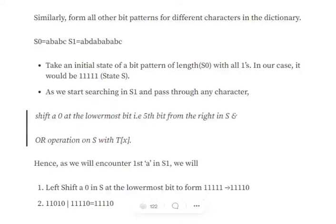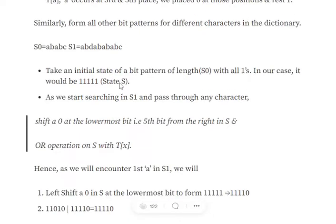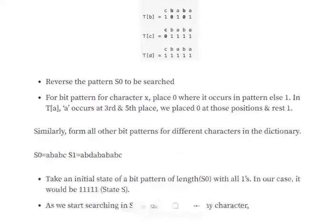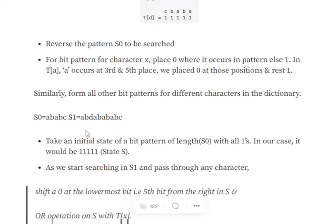Now, we start with an initial state of size equal to the length of s0. Since s0 has 5 characters, we start with the initial state 11111. This is an arbitrary default state indicating we haven't found any match yet — state s equals 11111.